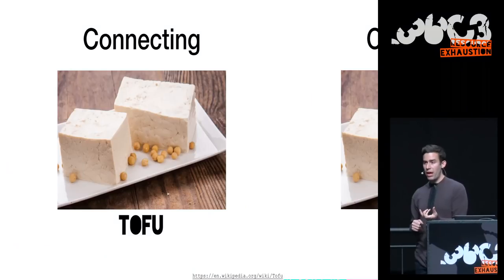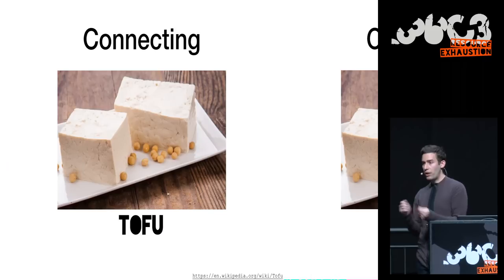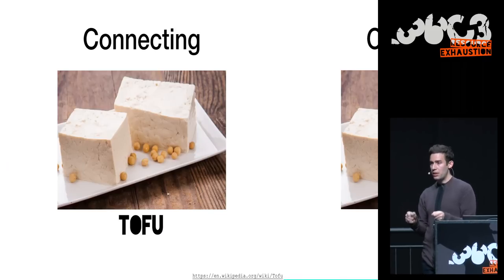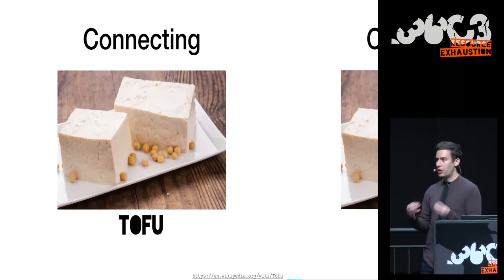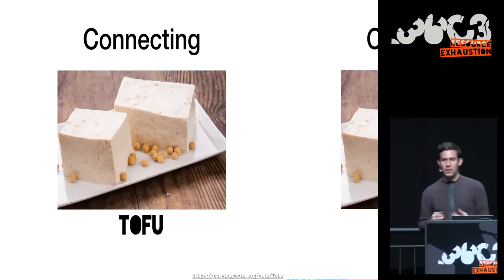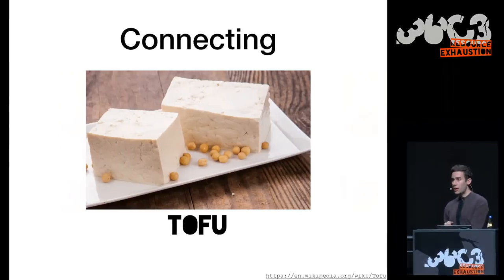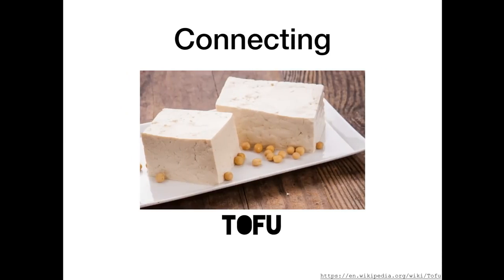On our devices we generally resort to a concept called TOFU — trust on first use. When I first see a key that identifies someone, I'll save it. If I ever need to communicate with that person again, I've already got a key and can keep using it, expecting it to stay the same. That continuation and ability to pin keys means that if when you first establish a connection with someone it's the real person, then someone who compromises them later can't take over or change that.